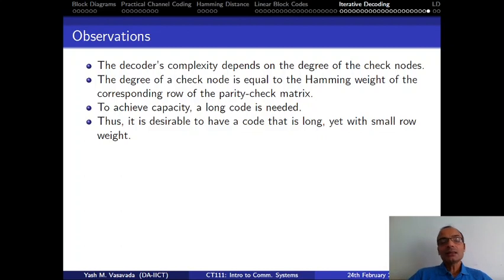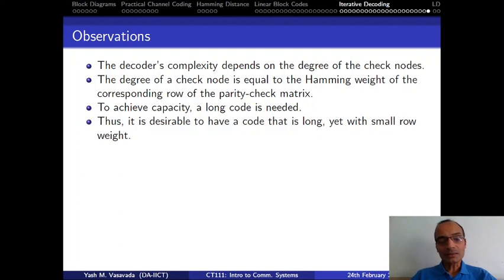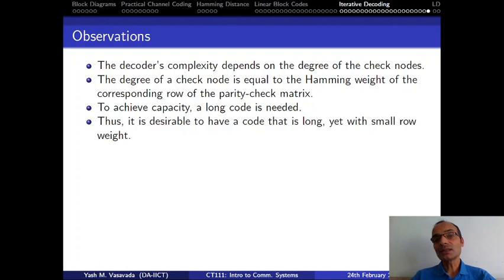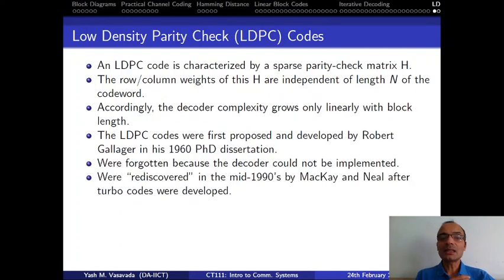This is the idea behind one of the very well-known codes these days — it has gained a lot of prominence. In the context of 5G, these codes are being used, so when you get your 5G phone, your phone will have this particular code, which is known as the low-density parity check code. By its name, an LDPC code is a code whose parity check matrix has low density.